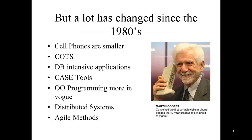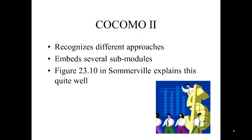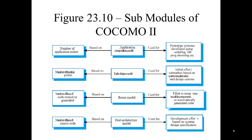A lot has changed since the 1980s: cell phones have gotten smaller, we have off-the-shelf components, more database-intensive applications, CASE tools, object-oriented programming, distributed systems, online systems, and agile methods. COCOMO 2 recognizes these changes and has several sub-models. Figure 23.10, found on page 637 in the 9th edition, shows the sub-modules of COCOMO 2. There are four: the application composition model for scripting or database programs; the early design model used after requirements are established, using function points converted to lines of source code; the reuse model to compute effort for integrating reusable components or auto-generated code; and the post-architectural model for more accurate cost estimation after the system architecture is designed.